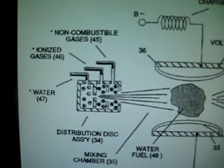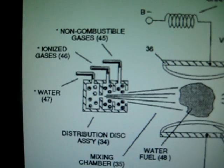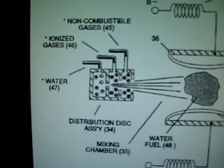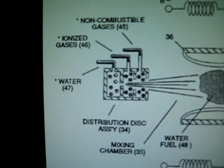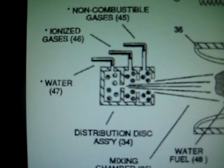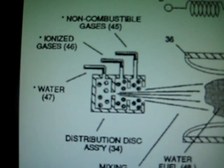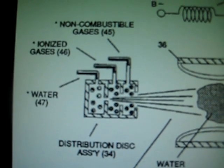He has his gas mixture chamber right here where he has the water, the ionized gas, and the non-combustible gases. The first thing I noticed when I was looking at this is the notches between the chambers are different sizes. The one for the water is small, then the next one for the ionized gases is a little bit larger, and then the next one is even larger than that.